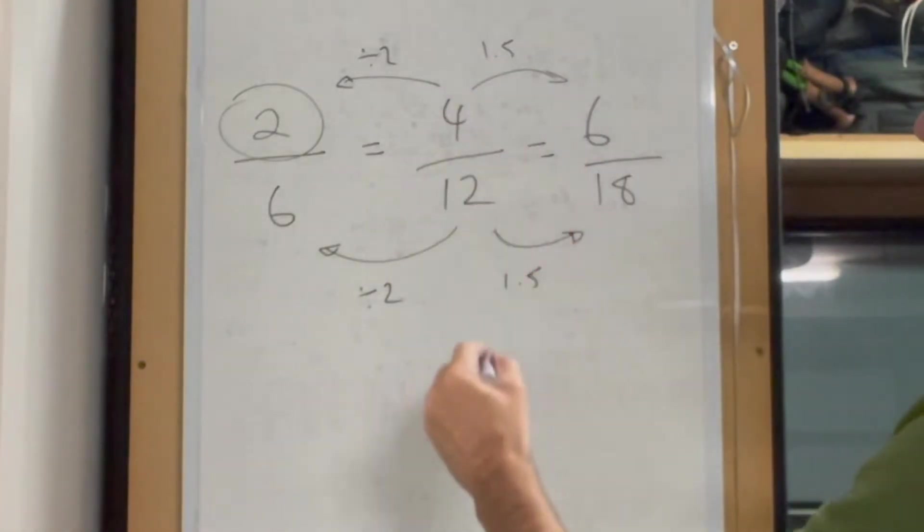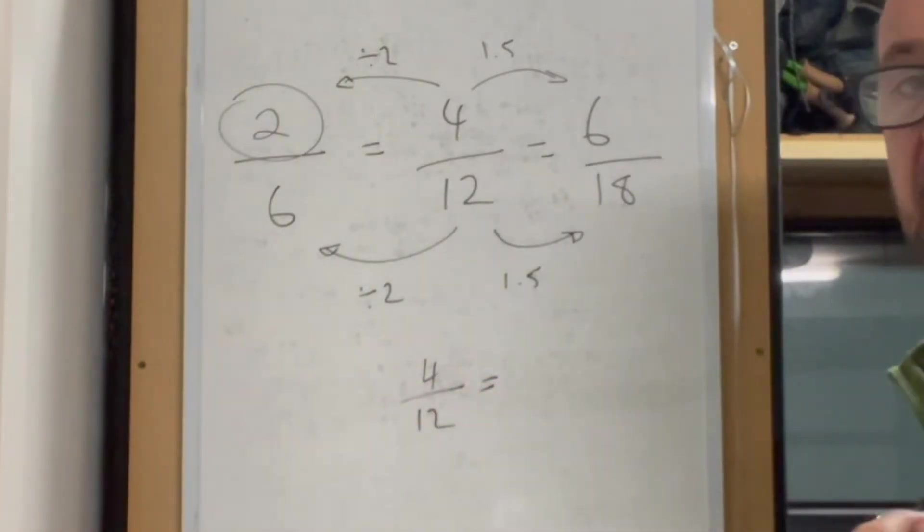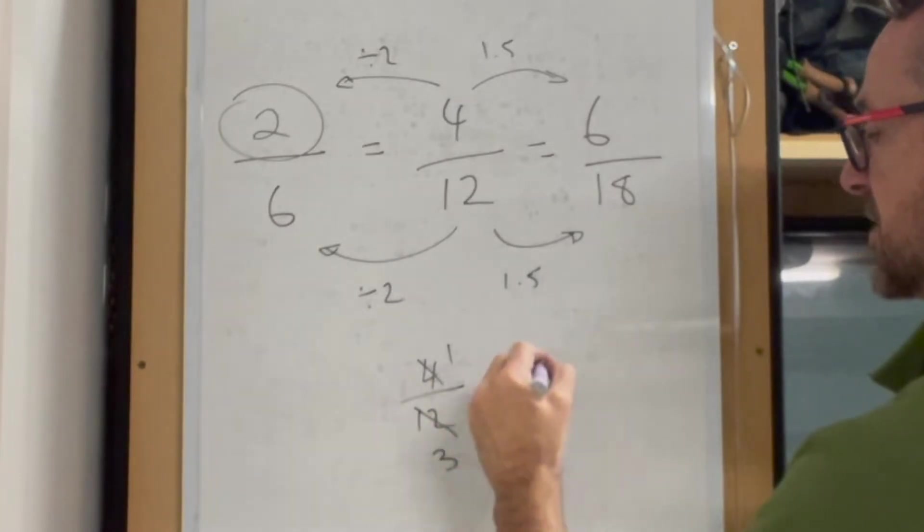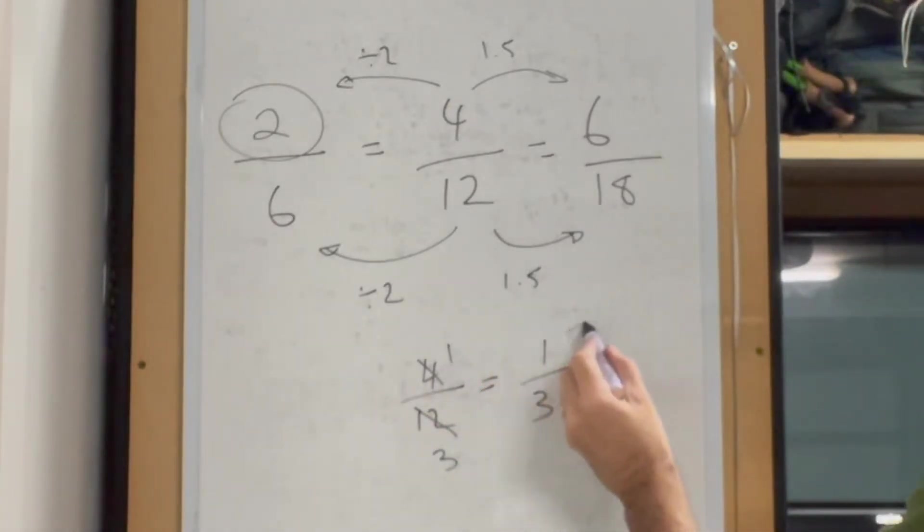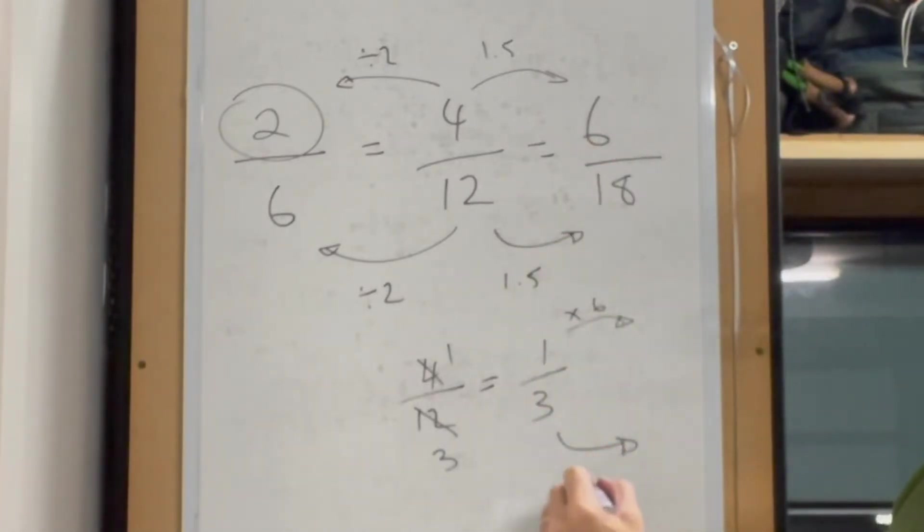The other way to tackle this would be to simplify 4 over 12. 4 goes once, 4 goes 3 times, that equals 1 third. Then multiply by 6 to get 6, and multiply by 6 to get 18. 6 over 18.